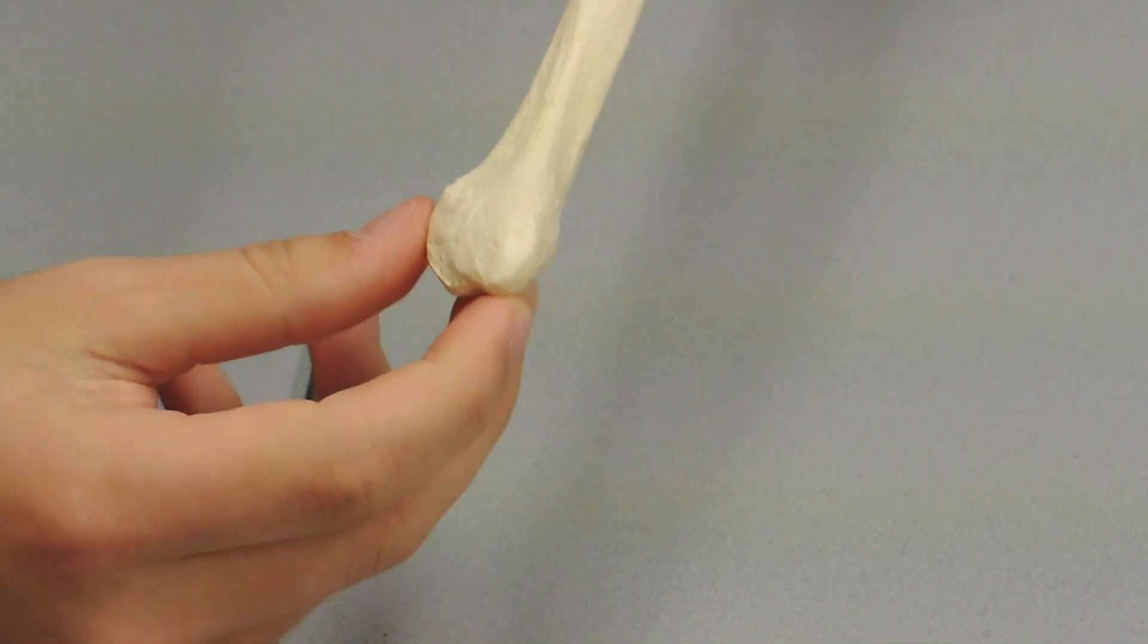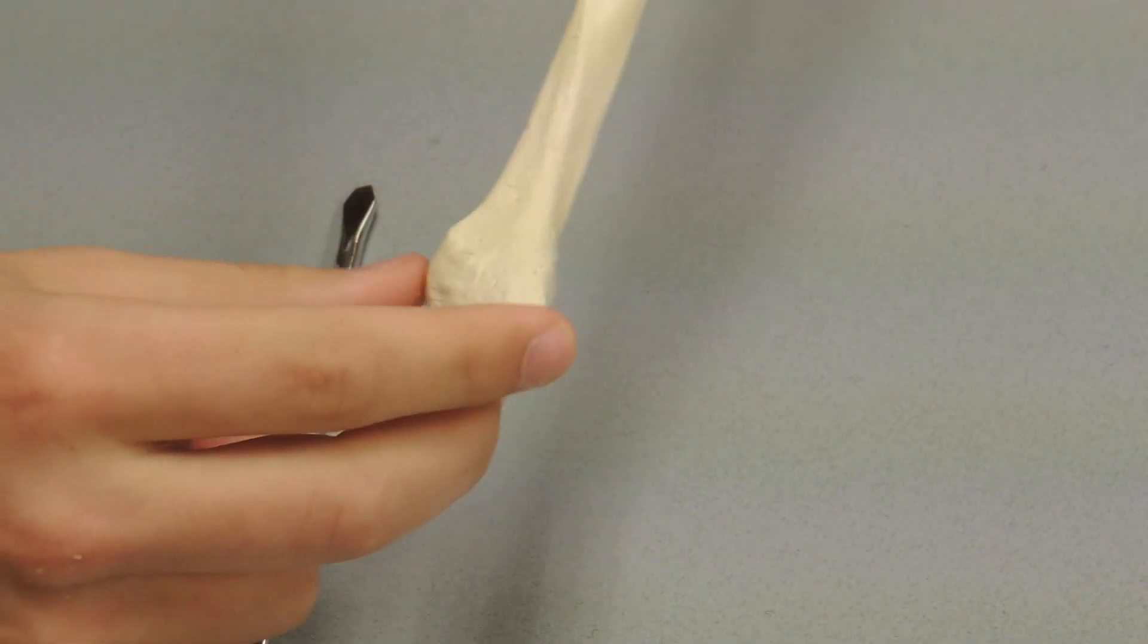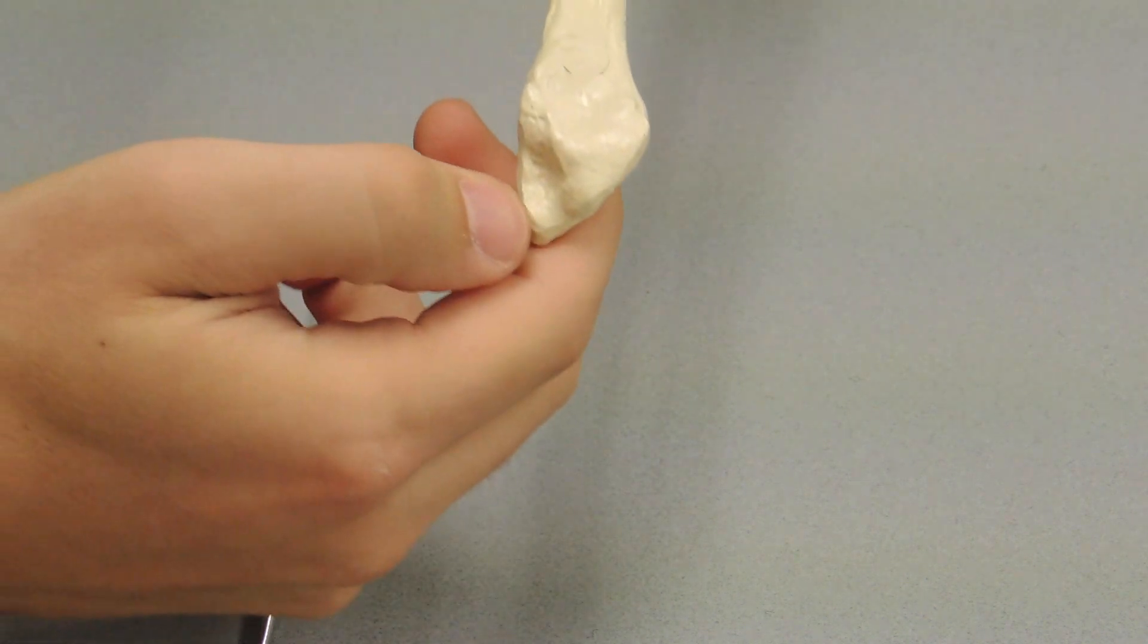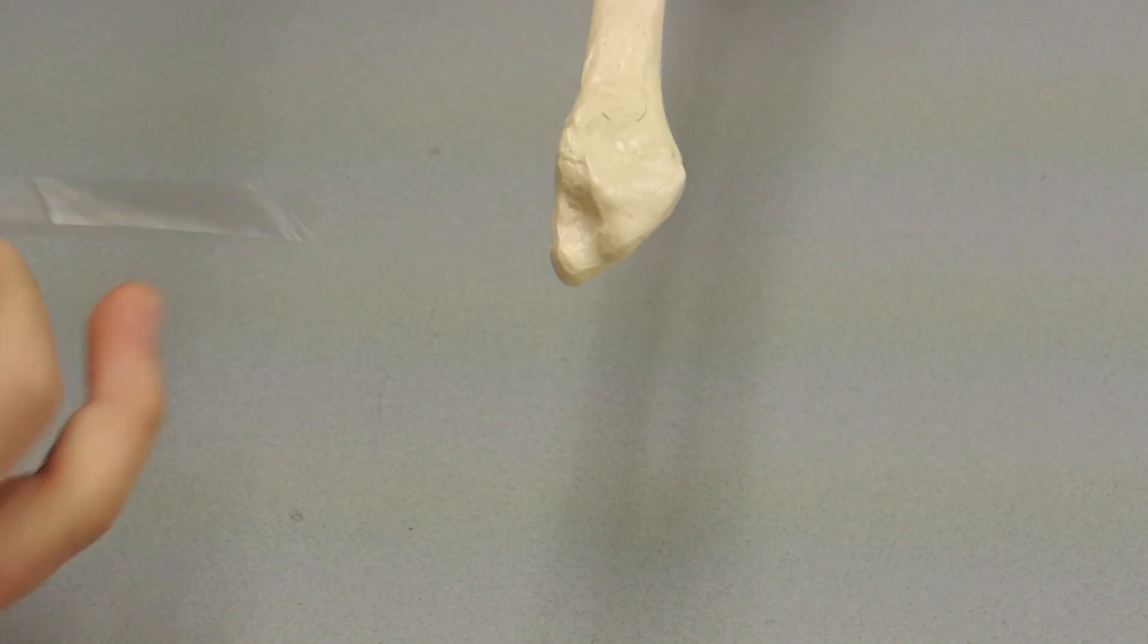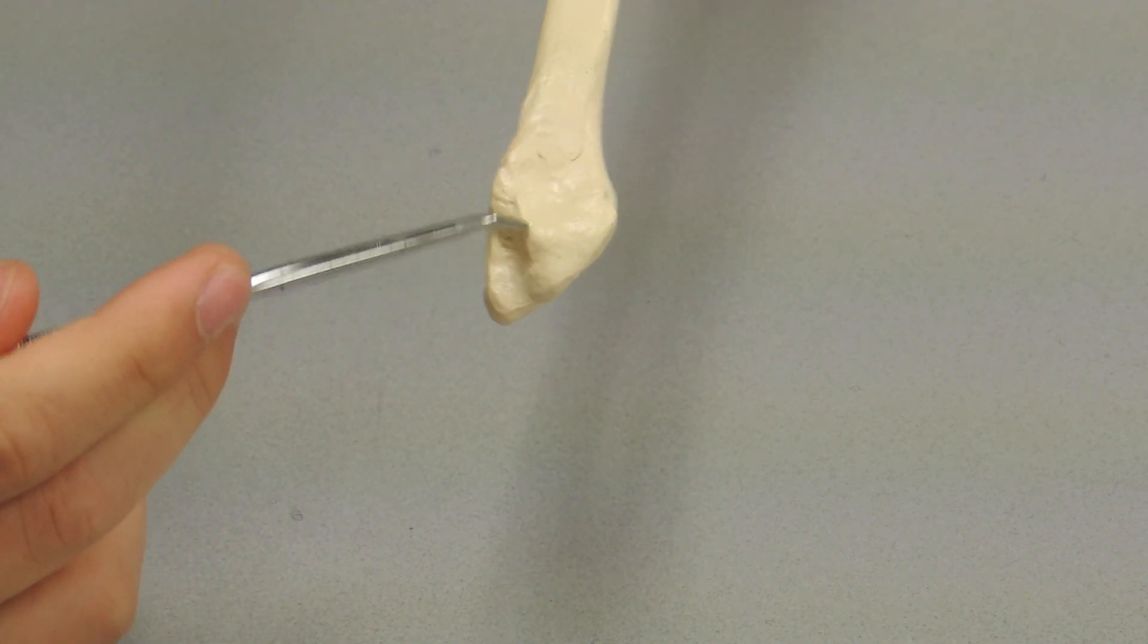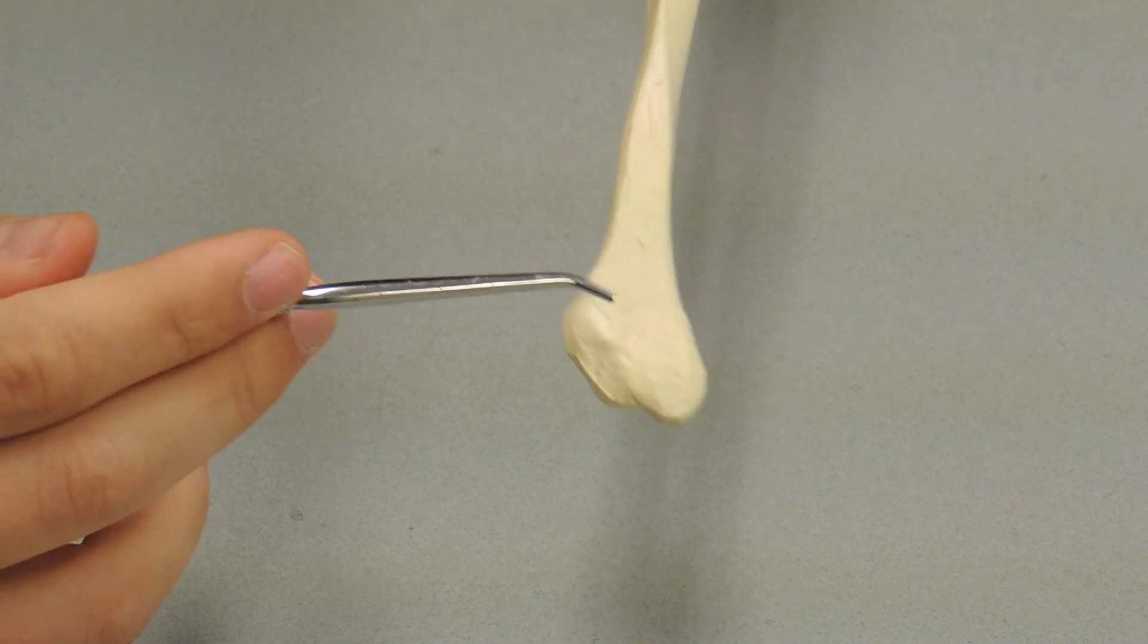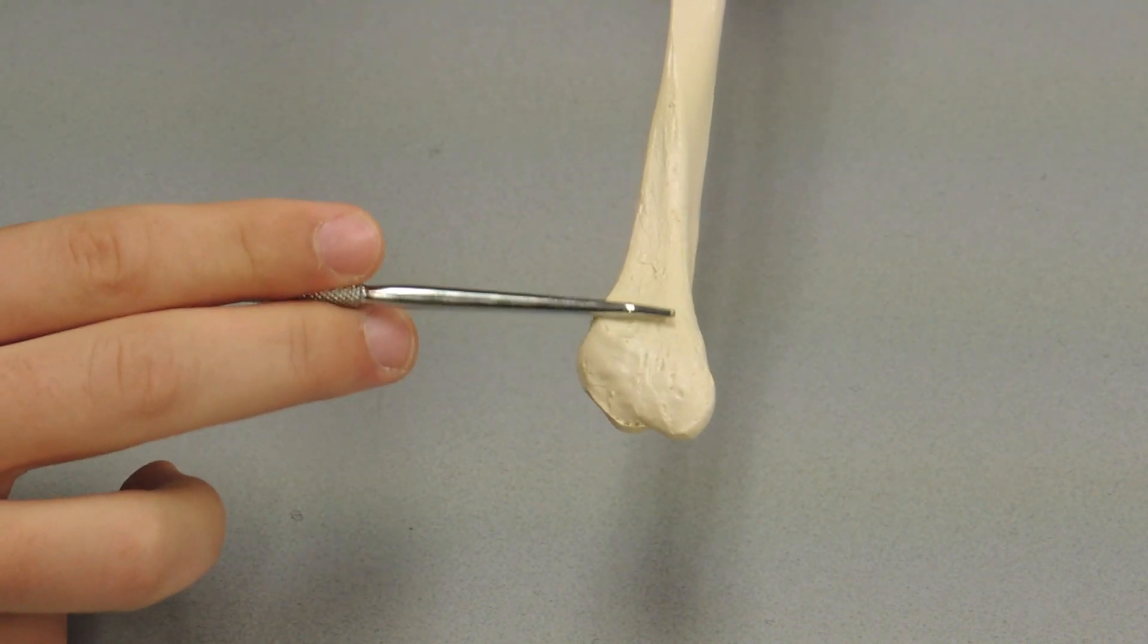Moving down to the lateral malleolus, again different from the head, it has more of a divot that you can almost, you can kind of stick a probe in it, you can get your pinky in it. So that would make this side the distal end or the lateral malleolus. So this right here would be your lateral malleolus.